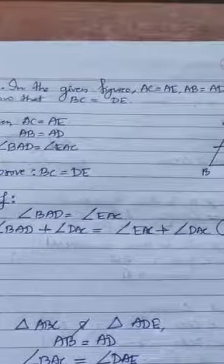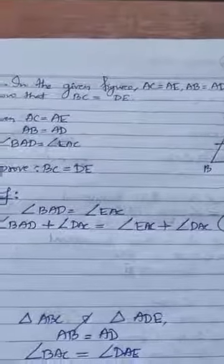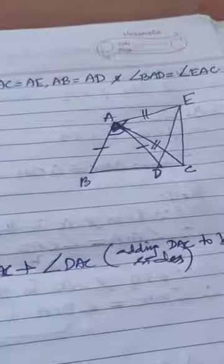See, the diagram is this one. I mark with bar dashes here. AB with one bar means AB equal to AD. AC with two bars means AC equal to AE. Finally, angle BAD, the bigger one, equal to angle EAC, the smaller one.